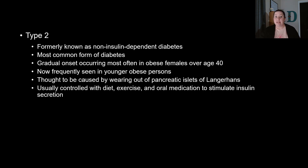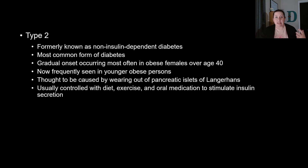Type two diabetes is formally known as non-insulin-dependent diabetes and is actually the most common form. It develops normally later in life, typically after age 40, and obesity and being female increases your risk. It's frequently being seen in younger obese people as well, and individuals may be termed pre-diabetic early on. This is thought to be caused by a wearing out of the pancreatic islets of Langerhans. It's usually controlled through diet, exercise, and oral medications that help stimulate insulin secretion — since the pancreas still makes insulin, but may have difficulty releasing it.